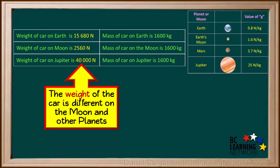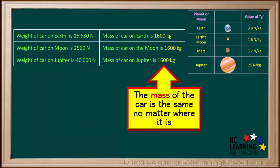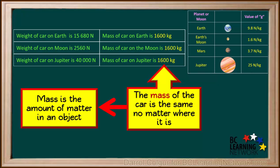Summarizing the results, we see that the weight, or force of gravity, on the car is different on Earth, the Moon, and other planets. This is because the values of g, or gravitational acceleration, are different on these different bodies. But the mass of the car is the same no matter where the object is, because mass is simply the amount of matter in an object, which does not change with location.